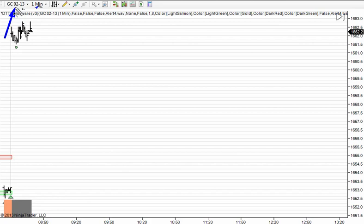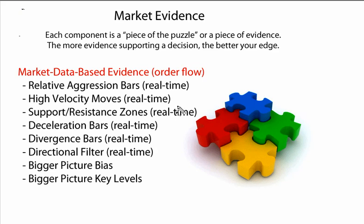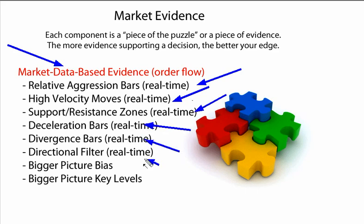This is a one-minute chart on gold. You can use this on any time frame and essentially any market. What we are looking at here are various pieces of real-time, market-data-driven evidence happening in real-time. It's as if there are various puzzle pieces — the more puzzle pieces or pieces of evidence that come together, the more clear you can see the market and the more of an edge you'll have on particular trades.